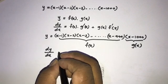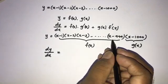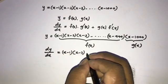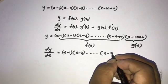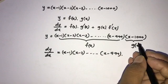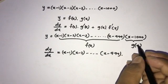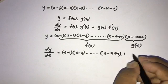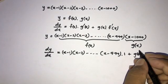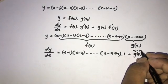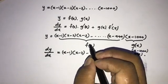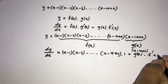So dy/dx equals the first function — (x-1)(x-2)···(x-999) — times the derivative of g(x), which equals 1, plus the second function g(x), which we can write as (x-1000), times the derivative of the first function f'(x).